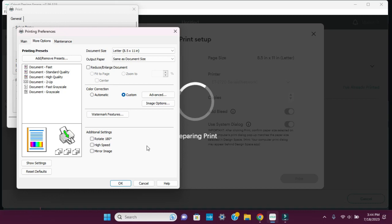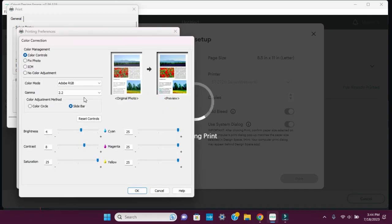Then More Options and make sure that the High Speed is not checked or the Mirror, because we just mirrored it in Cricut Design Space. Then we're going to select Advanced. For the Epson, the color control I do for the color mode is Adobe RGB Gamma 2.2, and I adjust these to my liking. Everyone's different, so you may want to play around with it to see what's right for you.